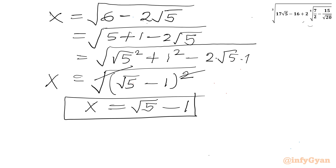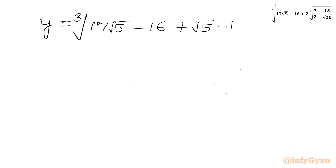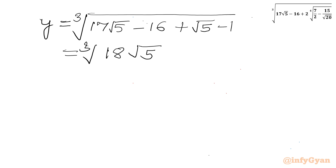This was our x including the 2, so in the original expression I will substitute √5 minus 1. Let us call the full expression equal to y. So y equals the cube root of (17√5 minus 16) plus (√5 minus 1). Simplifying inside gives y equals the cube root of (18√5 minus 17).